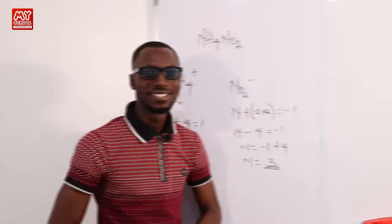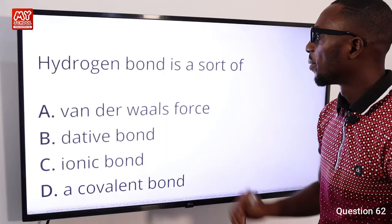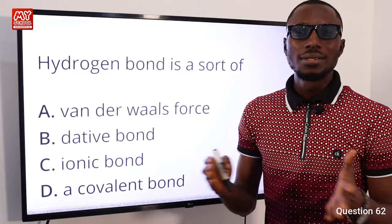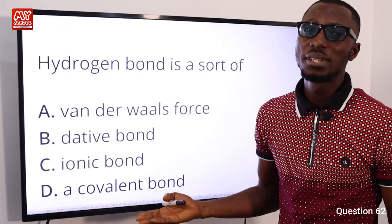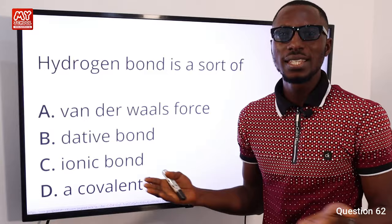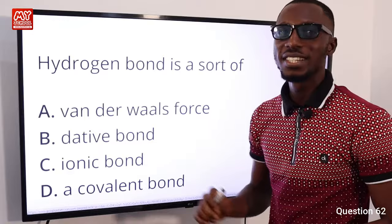Question 62: Hydrogen bond is a sort of what bond? It is a kind of bond formed by electrostatic attraction between a hydrogen atom and electronegative atoms like fluorine, oxygen, or nitrogen. Even though the strength is about one-tenth of a typical covalent bond, it is still considered a covalent link. Option D is correct.